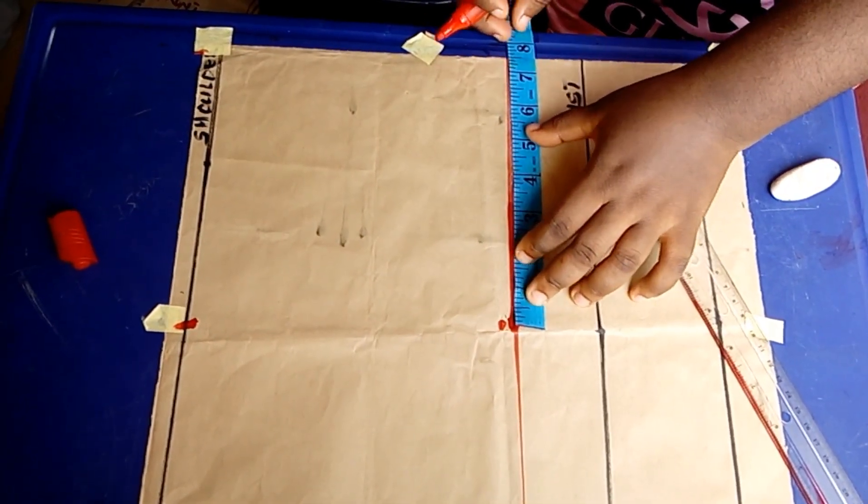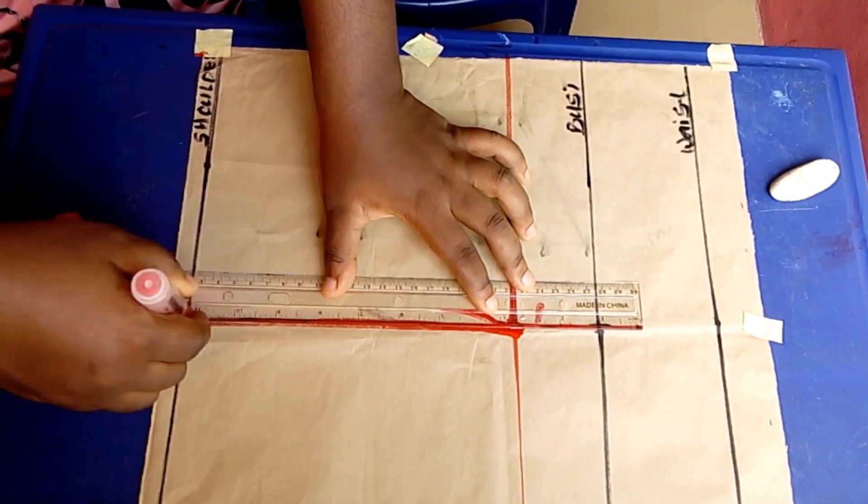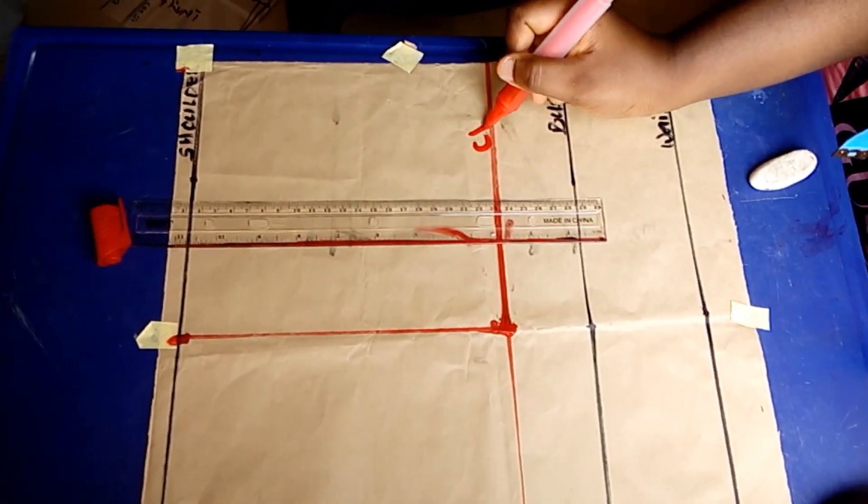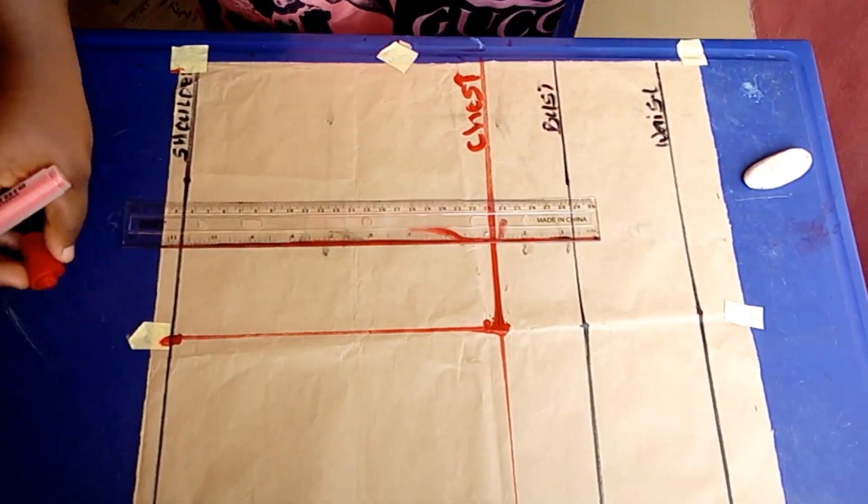I'm repeating my shoulder measurements both on the chest line and on the shoulder line with a straight line. Let me just label this chest so that we don't get confused.